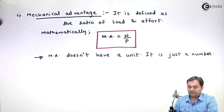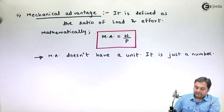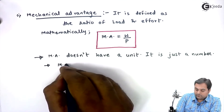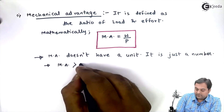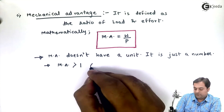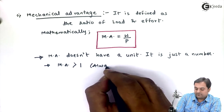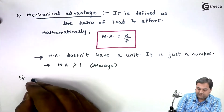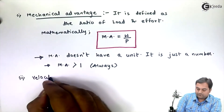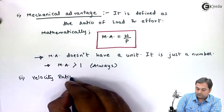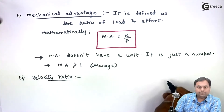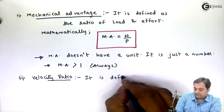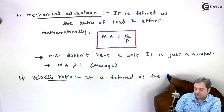Mechanical advantage does not have a unit — it is just a number. Mechanical advantage will always be greater than one for simple machines. The next definition is velocity ratio.